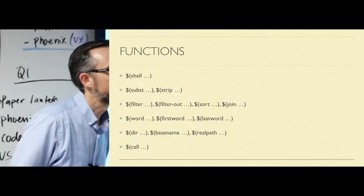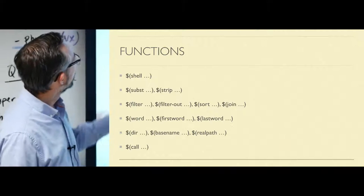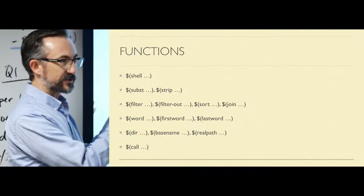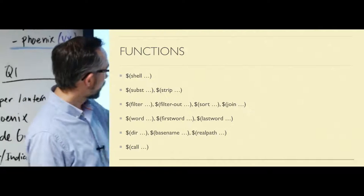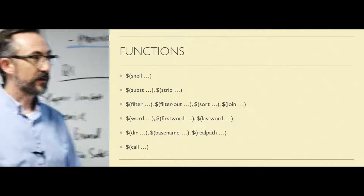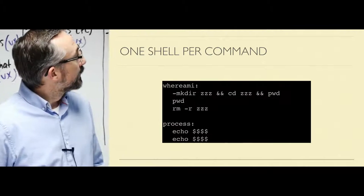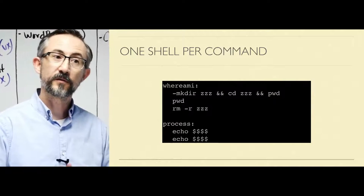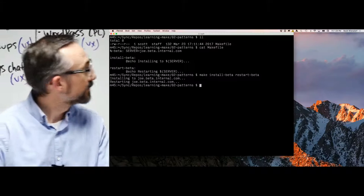Is there any way to get standard error? Redirect to. Subst is for replacement — it's like a regular expression s///. Strip, filter. Filter-out is like grep -v. Sort, etc. The other interesting one is 'call,' which is like JavaScript call — it invokes a function for you, but the function is in a variable name. As I mentioned before, every command in a recipe executes in its own shell.